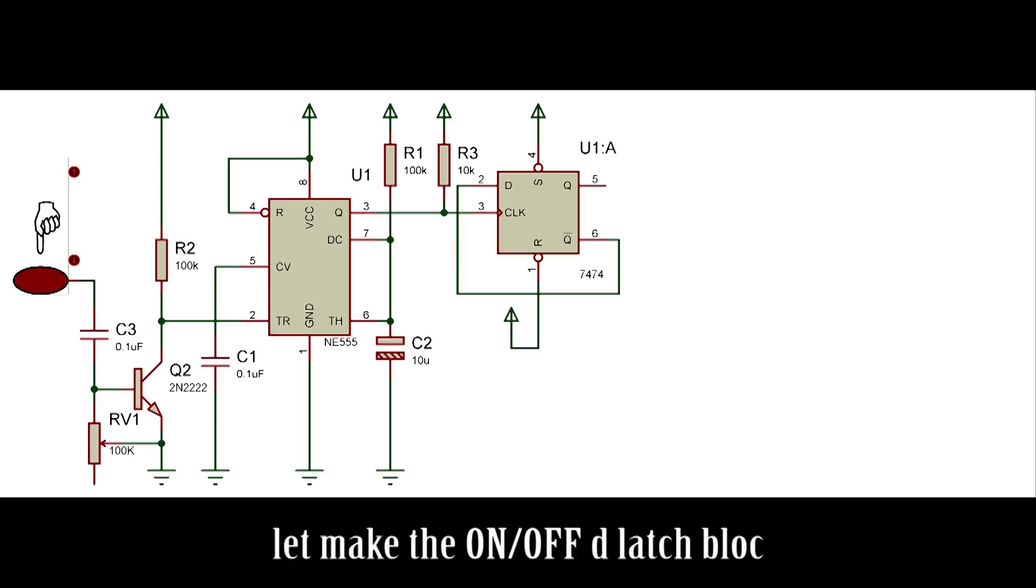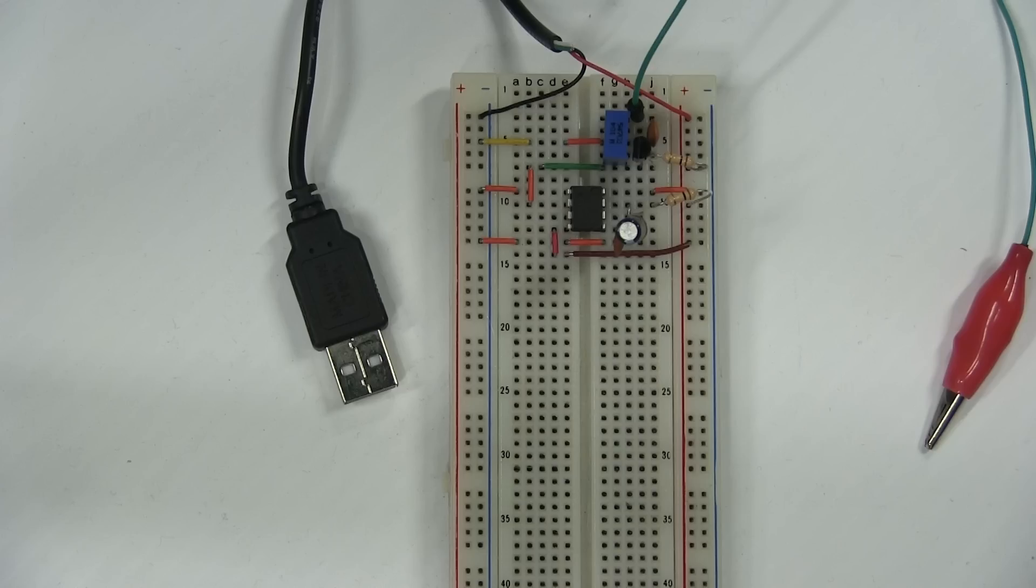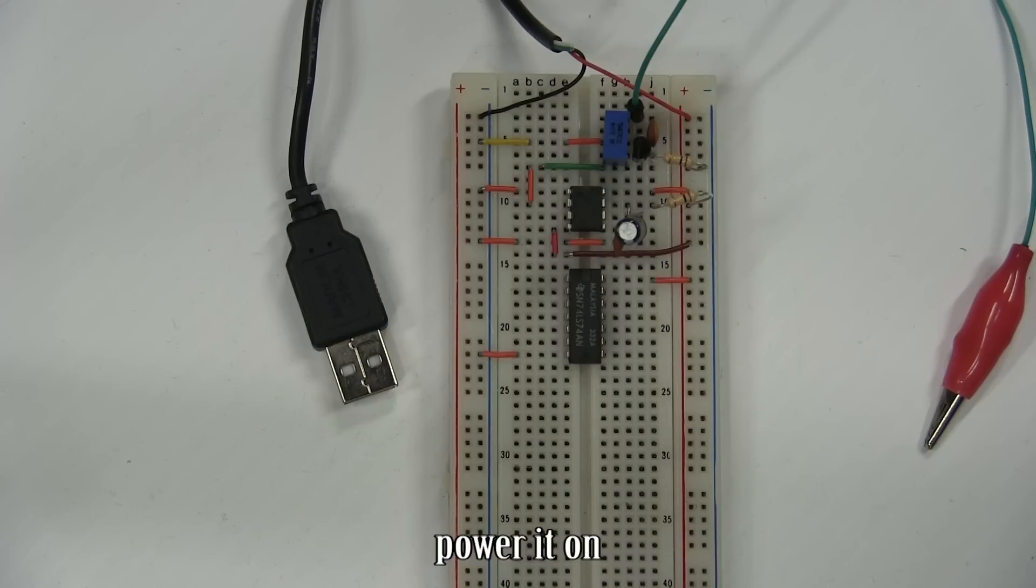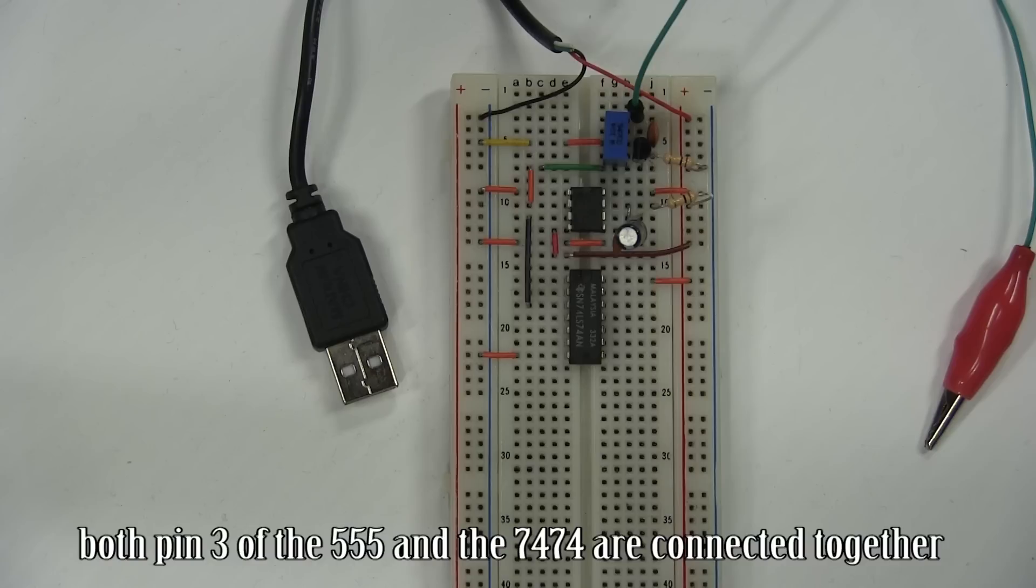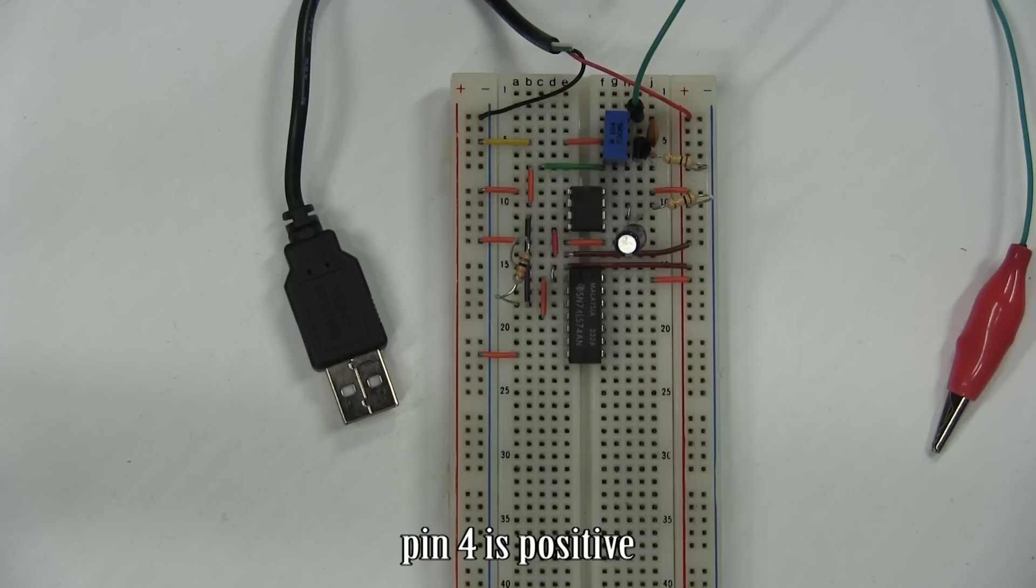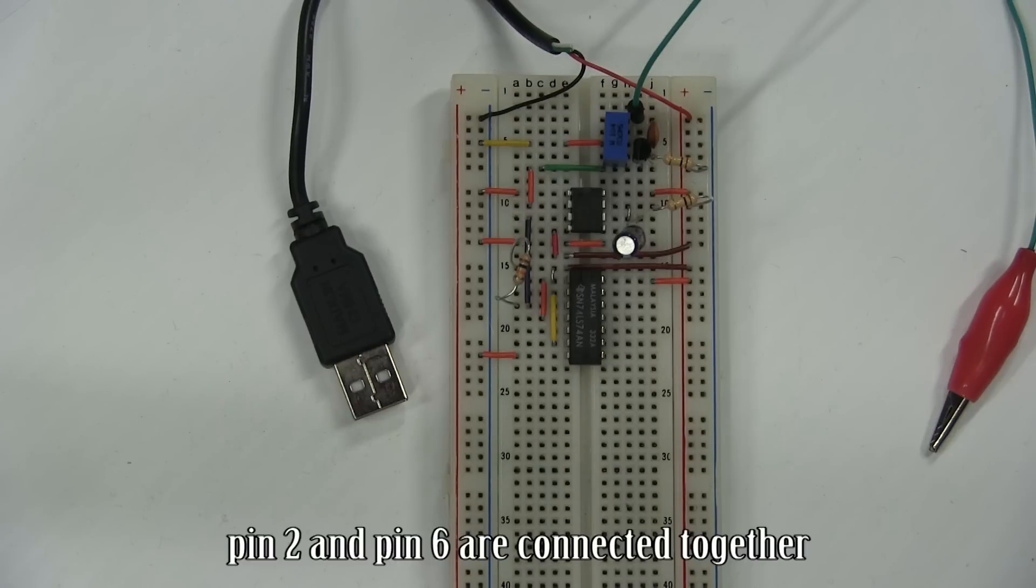Let's make the on-off D-latch block. Add the 7474 D-latch to the circuit. Power it on. Both pin 3 of the 555 and the 7474 are connected together. Pin 1 is positive and pin 3 goes to positive via a 10k resistor. Pin 4 is positive. Pin 2 and pin 6 are connected together.